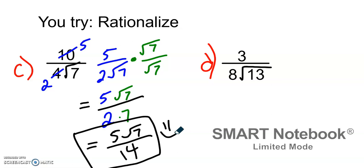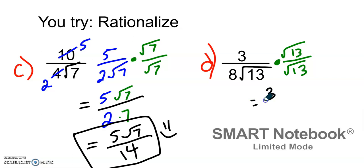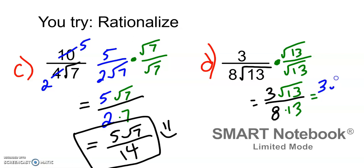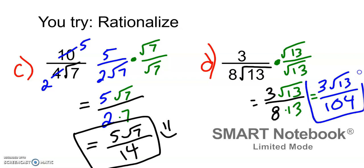For example D, we have 3 over 8 root 13. I can't simplify anything there, so I multiply both the numerator and denominator by the square root of 13. That gives 3 root 13 over 8 times 13. Eight times 13 equals 104. So our answer is 3 root 13 over 104.